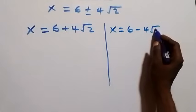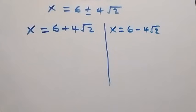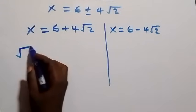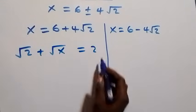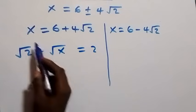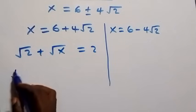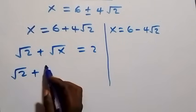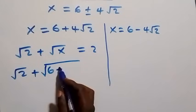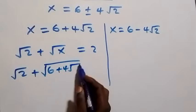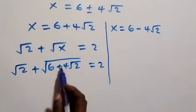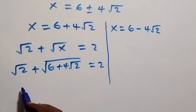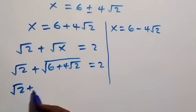The first is x equals 6 plus 4 root 2, or x equals 6 minus 4 root 2. Now let's check which of these satisfies the given problem: root 2 plus root x equals 2. Substituting the first value: root 2 plus root of 6 plus 4 root 2 equals 2.